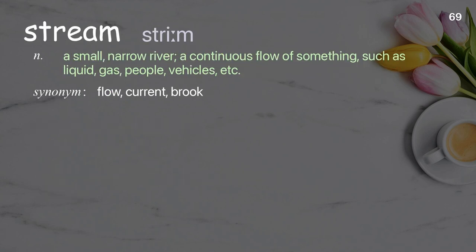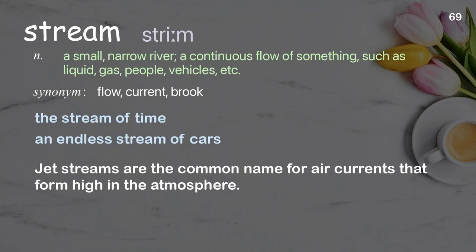Stream: A small, narrow river; a continuous flow of something, such as liquid, gas, people, or vehicles. Examples: The stream of time, an endless stream of cars. Jet streams are the common name for air currents that form high in the atmosphere.